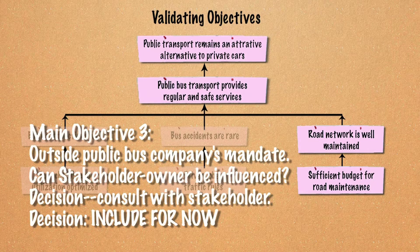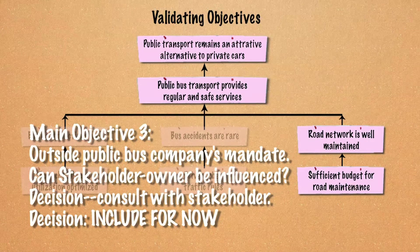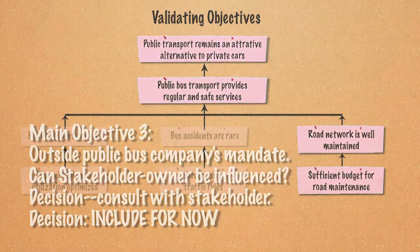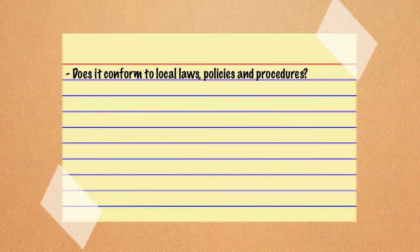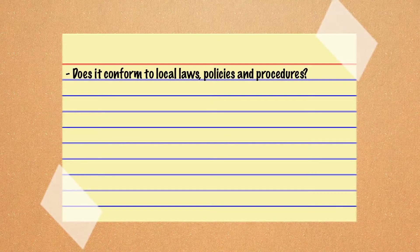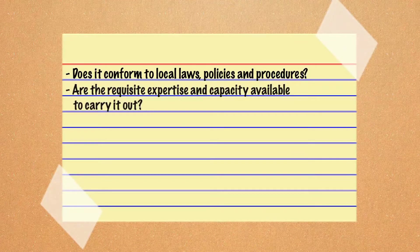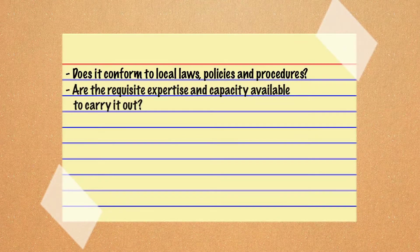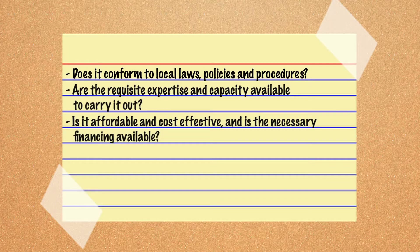Conclusions. Before concluding on the selected results chains, consider the following questions. In our example, the decision is to include for now in the proposed project. Does it conform to local laws, policies, and procedures? Are the requisite expertise and capacity available to carry it out? Is it affordable and cost-effective? And is the necessary financing available?